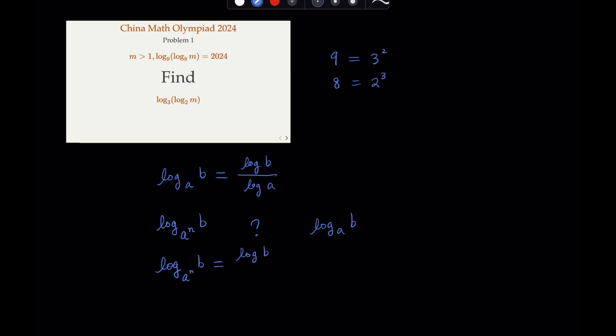log b over log a to the nth power. Now, for logarithm, if you have the exponential here, it becomes a multiplication in front. So this becomes log b, and then the constant will be here, n come here, and log a, right? So that's 1 over n,